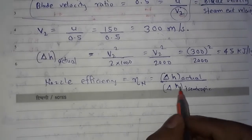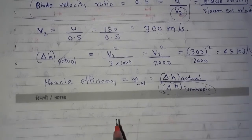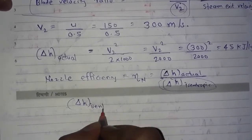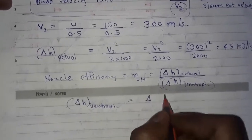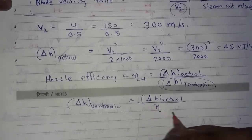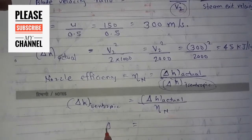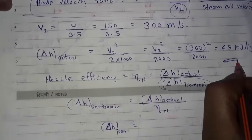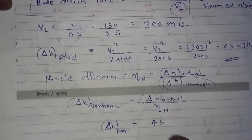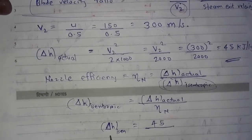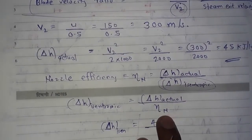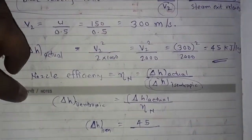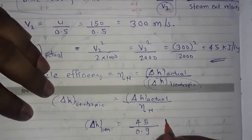We need to calculate delta h isentropic. Rearranging the equation, delta h isentropic is equal to delta h actual upon eta_n. Substituting the values: delta h actual is 45 kilojoule per kg, and eta_n (nozzle efficiency) is 0.9. So delta h isentropic equals 45 upon 0.9.